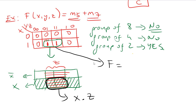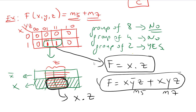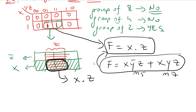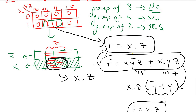These two cells are the intersection of X and Z, so f equals X·Z. The original function was m5 + m7, which expands to x·y'·z + x·y·z. By factoring out x and z we get x·z·(y' + y) = x·z. Using the K-map we simplified directly without manual algebraic manipulation.